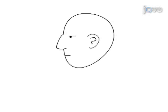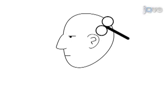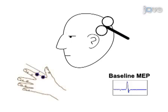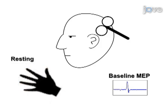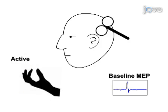This is accomplished by first locating the subject's M1 motor hotspot for the first dorsal interosseous muscle and determining both resting and active motor threshold.